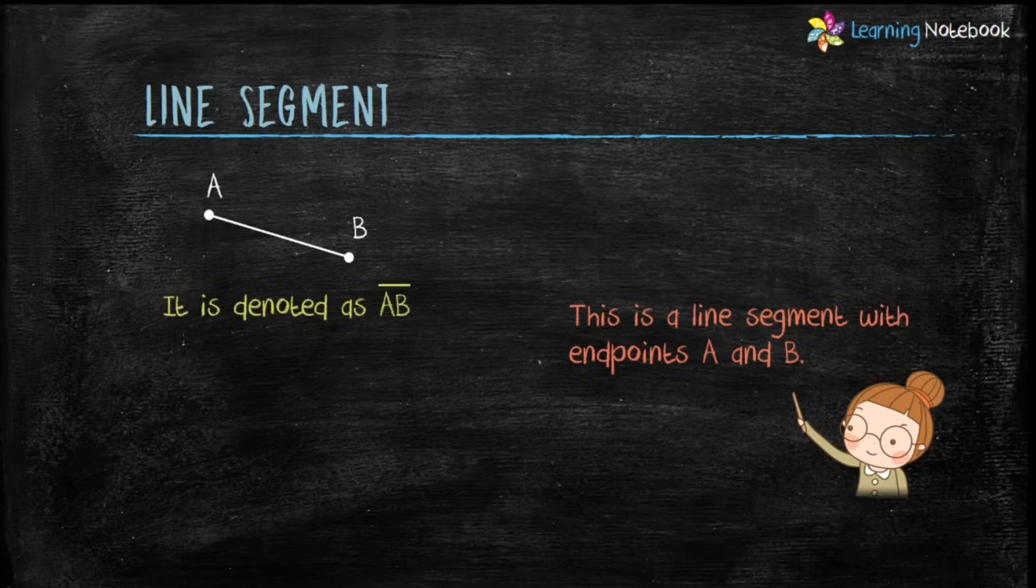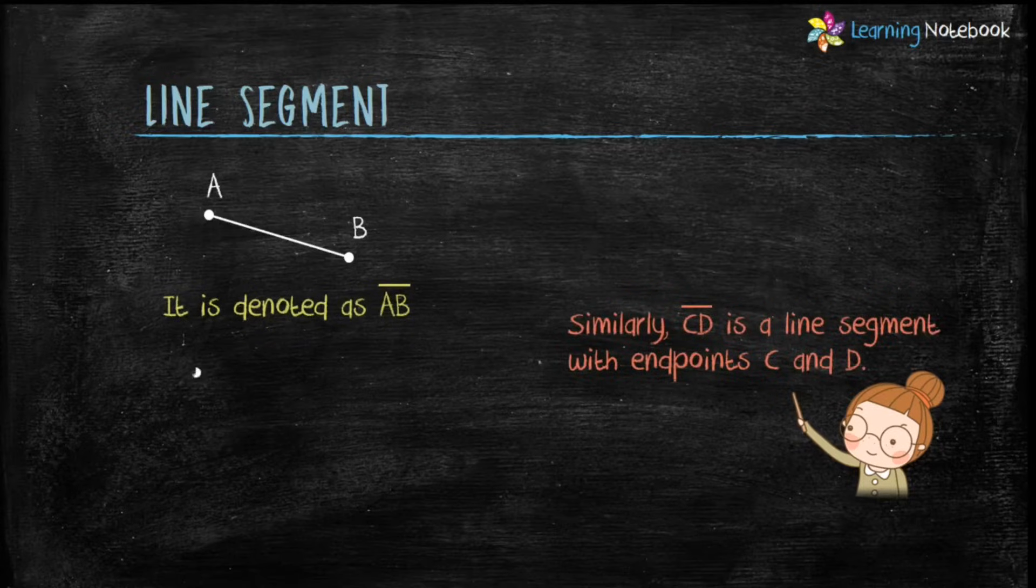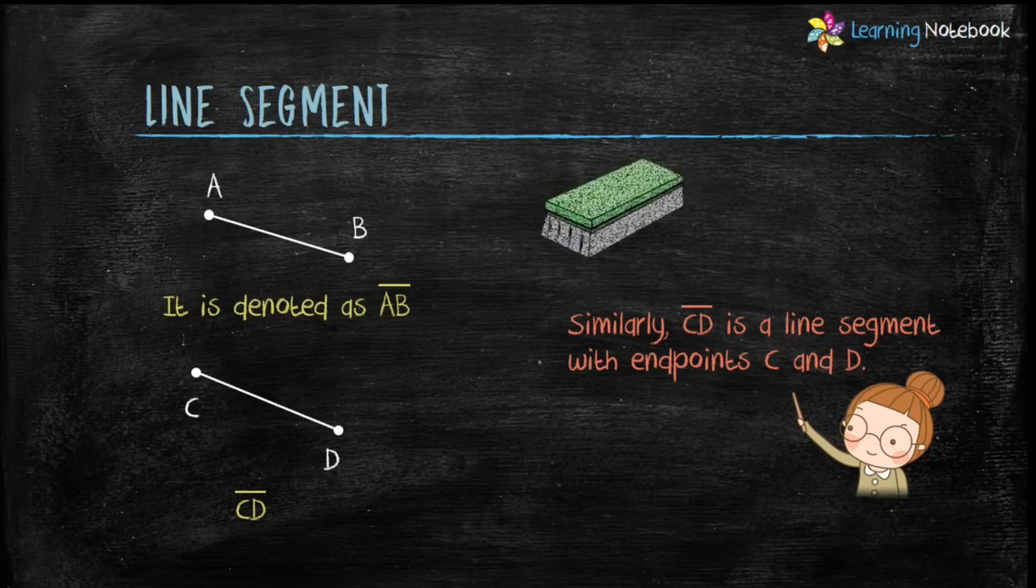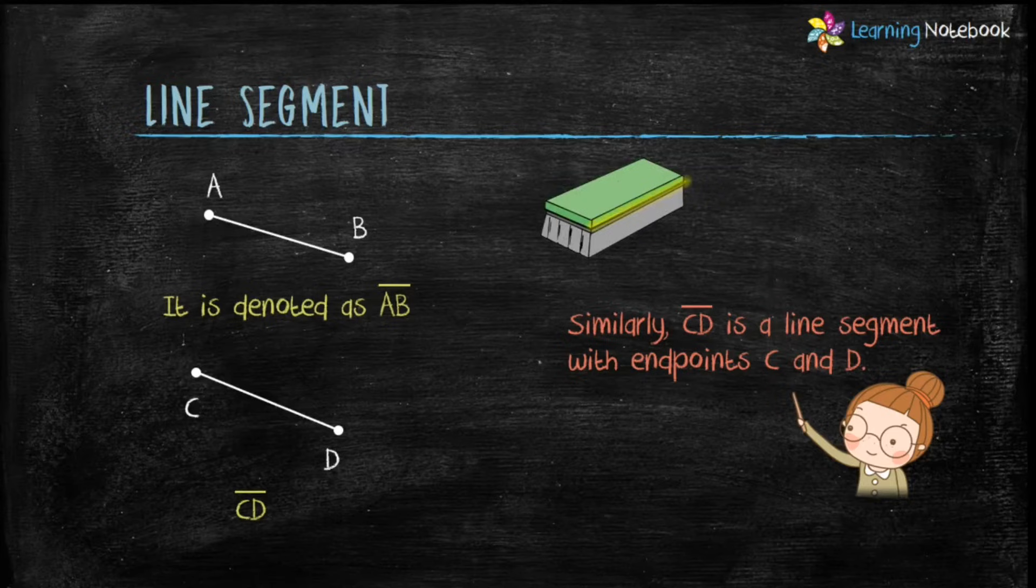This line segment is denoted as AB with a small line segment on it. Similarly, CD is a line segment with end points C and D and it is denoted as CD with a small line segment on it. Examples of a line segment are edges of a duster or edges of a ruler.